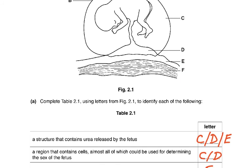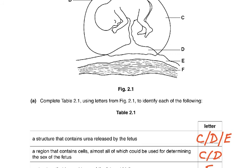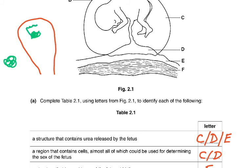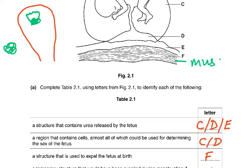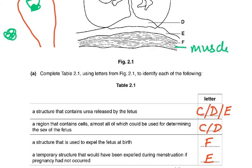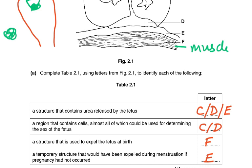A region whose cells would be used for determining the sex of the fetus: that would be C, or D, because the placenta is also made of fetal genetic material. When the zygote divides into a ball of cells and implants in the uterus, some cells separate and become part of the placenta — so the placenta is fetal genetic material. A structure used to expel the fetus at birth: that is F, the muscle in the wall of the uterus, which contracts and relaxes rhythmically — labor pains — until the cervix opens and the fetus is pushed out. A temporary structure expelled during menstruation if pregnancy had not occurred: that is E, the lining of the uterus.